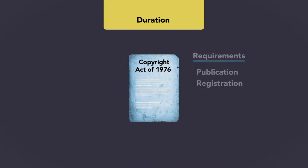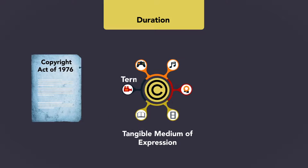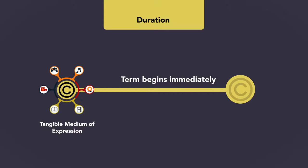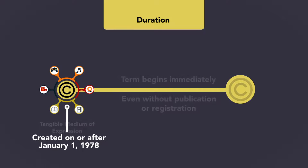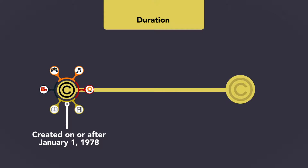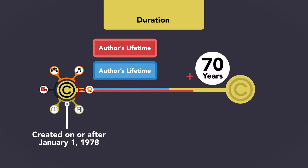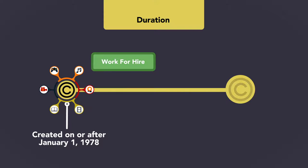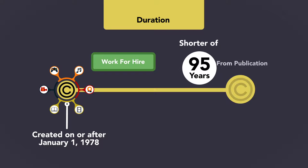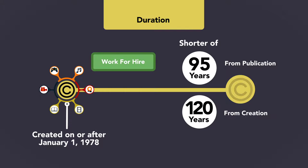The Copyright Act of 1976 eliminated the requirement of publication or registration. Instead, copyrights are established when a work is fixed in a tangible medium of expression. The copyright term begins immediately upon creation and fixation of the work, even without publication or registration. For works created on or after January 1, 1978, the copyright term is the lifetime of the author plus 70 years. If more than one author is involved, the term runs for the lifetime of the author who lives the longest plus 70 years. If the work is a work for hire, the term runs for the shorter of 95 years from publication, or 120 years from creation.